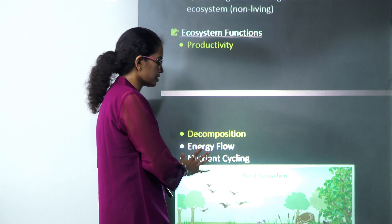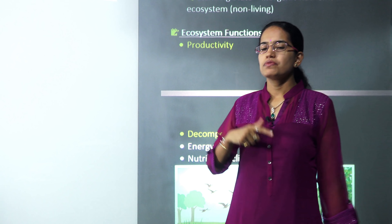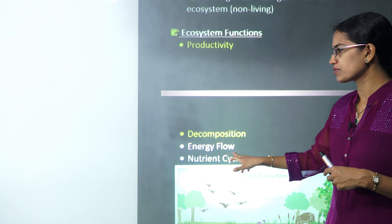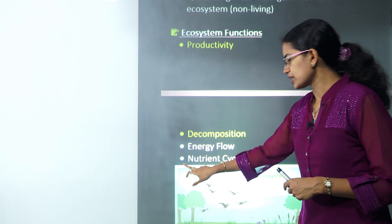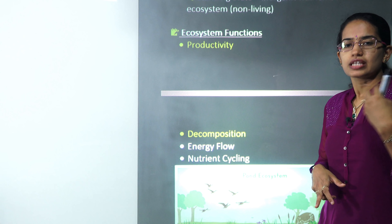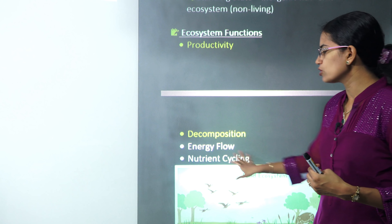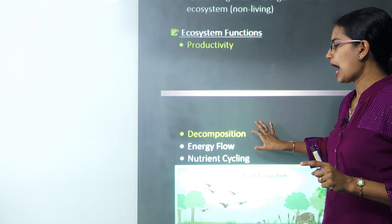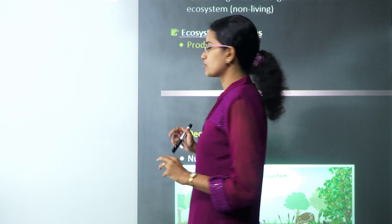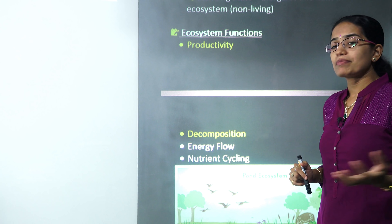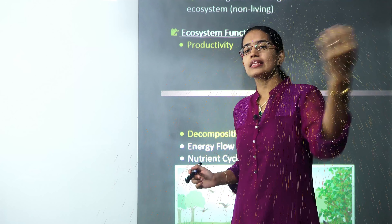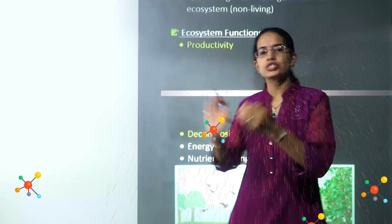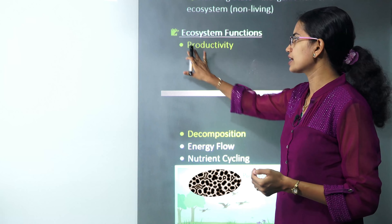Ecosystem functions have four primary functions. Energy flow along with food chain, food pyramid, and Lindeman's law will be covered in a separate lecture. Nutrient cycling — including carbon cycle, water cycle, nitrogen cycle, and sulfur cycle — will also be dealt with separately. Today our focus is productivity and decomposition. Productivity means trapping in energy — different molecules are joined together and synthesis takes place; it involves anabolism.